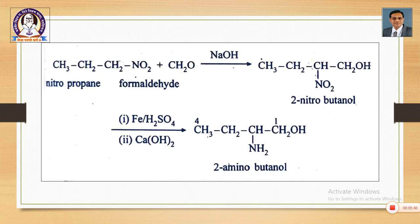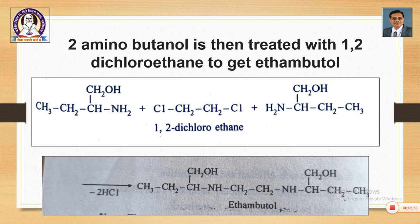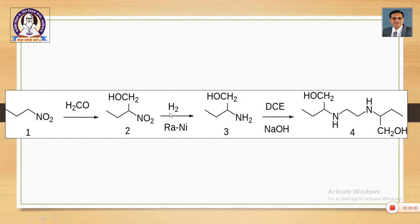Let us repeat once again. In the beginning we start with nitropropane, which undergoes reaction with formaldehyde to give 2-nitrobutanol. 2-nitrobutanol is converted into 2-aminobutanol, and this 2-aminobutanol is condensed with 1,2-dichloroethane to get ethambutol as the product. Schematically: 2-nitropropane → formaldehyde → 2-nitrobutanol → reduction → 2-aminobutanol → condensation with dichloroethane → ethambutol as the final product.